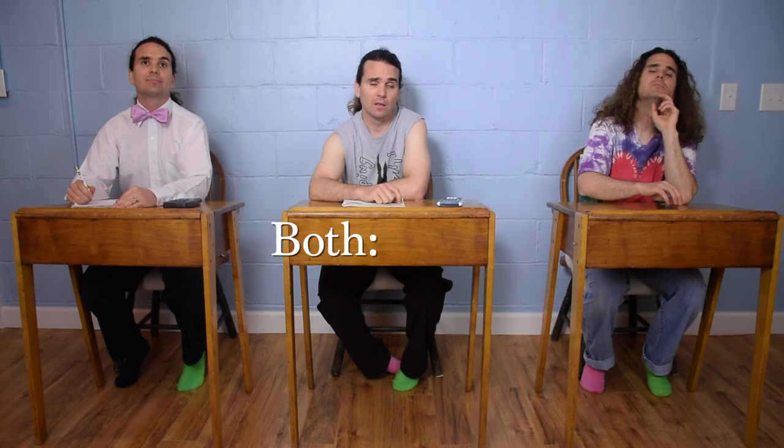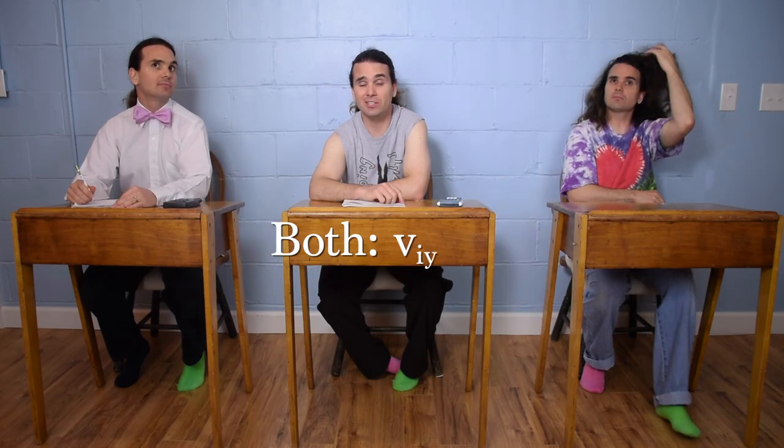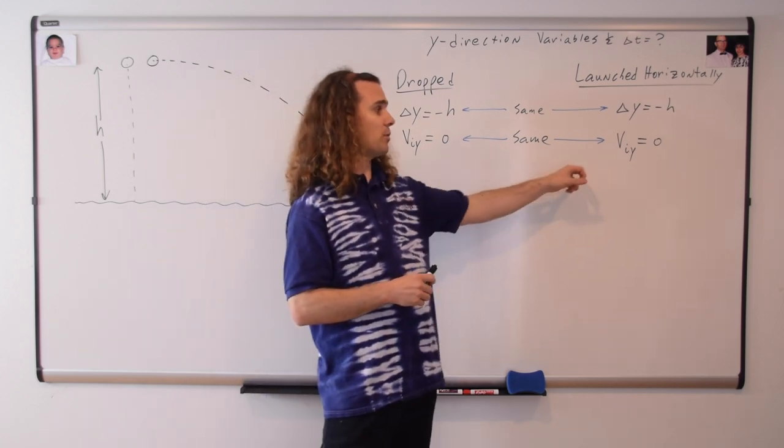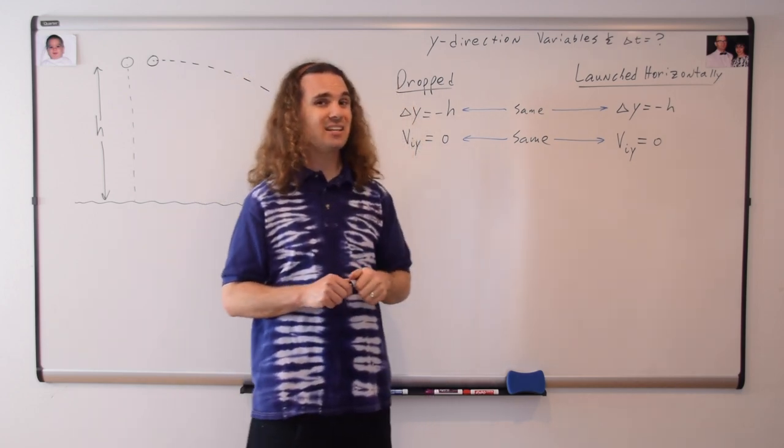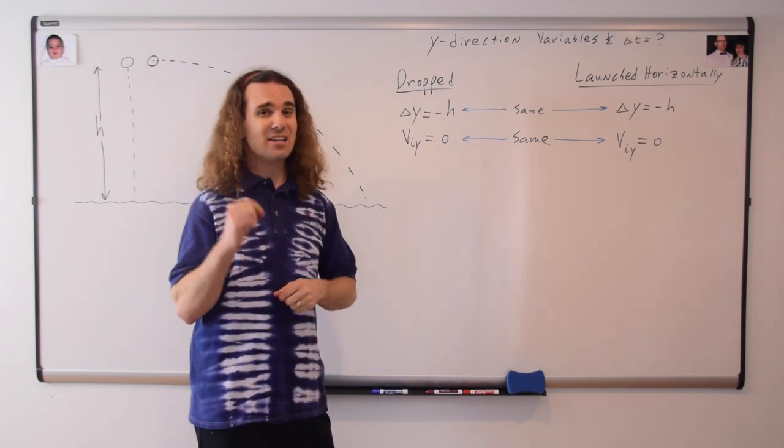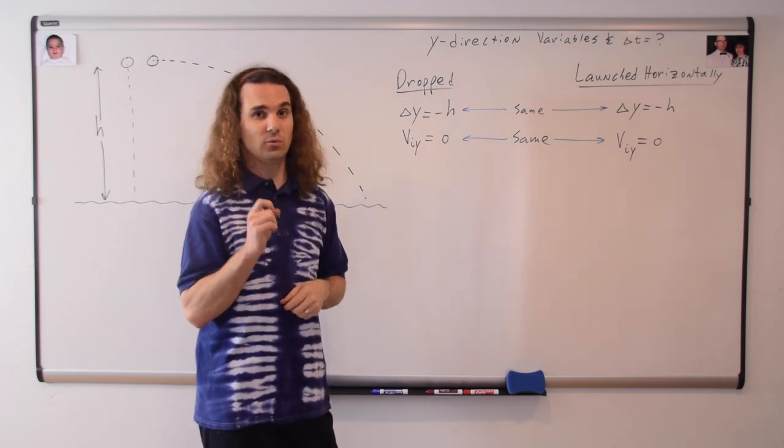Bobby, what else do we know? The initial velocity in the y direction is zero for both. Yes, regardless of the fact that the one that was launched horizontally has a velocity in the x direction, it's still, just like the one that was dropped, has an initial velocity in the y direction that is equal to zero.